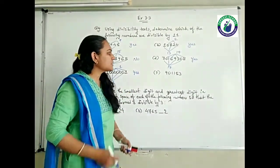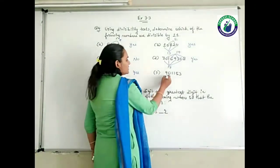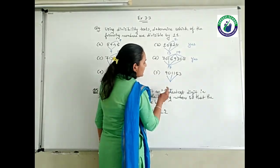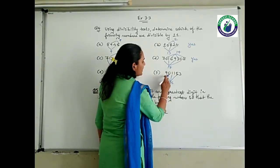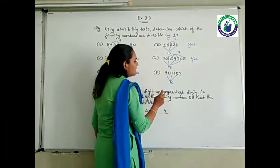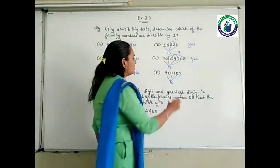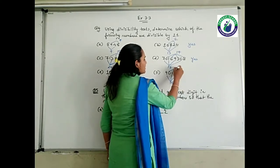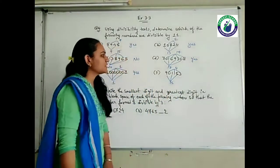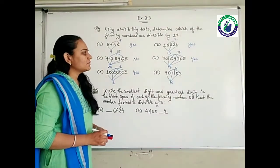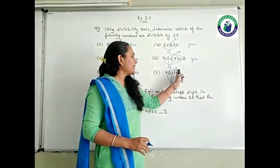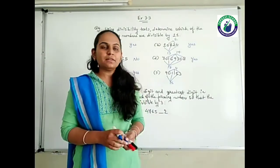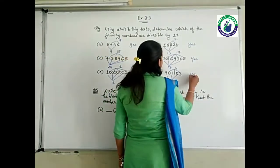Last one: 901153. Odd place digits — 9, 1, 5: 9 plus 1 is 10, plus 5 is 15. Even place digits — 0, 1, 3: 3 plus 1 is 4, plus 0 is 4. The difference is 15 minus 4, which is 11. Since 11 is divisible by 11, yes, this is also divisible by 11.